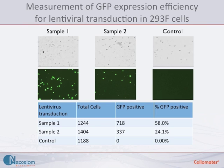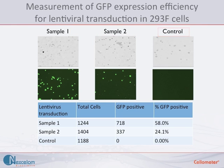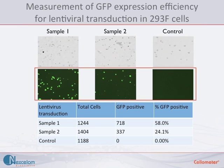Here we are looking at GFP expression efficiency for a lentiviral transduction in HEK-293 cells. Three data points were collected for this experiment: sample 1, sample 2, and a control. The micrographs for each sample show a brightfield image and a corresponding fluorescent image. The captured images were analyzed and the results are displayed below. In sample 1, 58% of the cells are GFP positive.